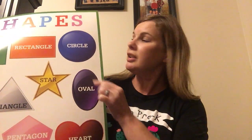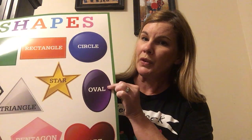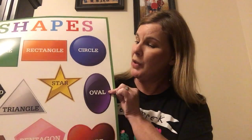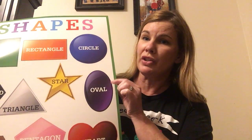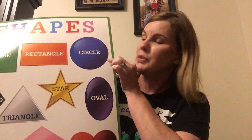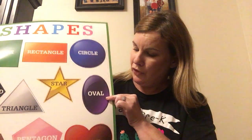Now let's go over here to this shape. It looks a lot like our circle, but it's not a circle. What is this shape? It's an oval. And an oval — I always tell my boys and girls — is a squished up circle. That's what this oval is.